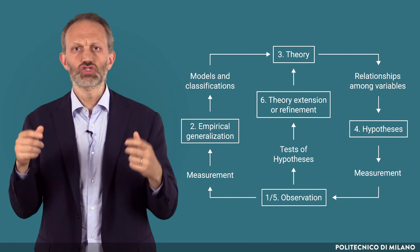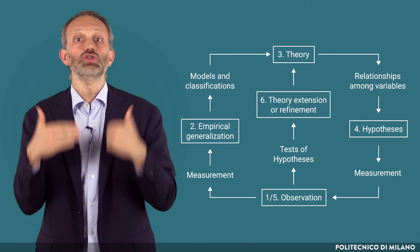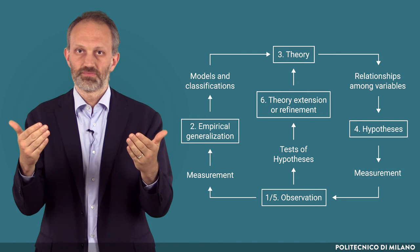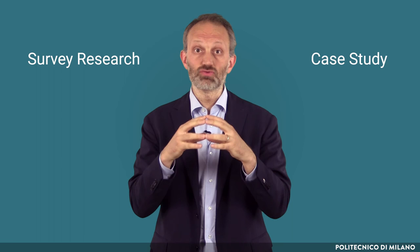The research cycle is a continuous loop. After theory testing we start again a theory-building phase to explore new phenomena and to look for new explanations, then we move again to theory testing, and so on. Therefore, the two methodologies presented — case study and survey research — are actually complementary, since together they allow to conduct both theory-building and theory-testing research, thus completing the research cycle.